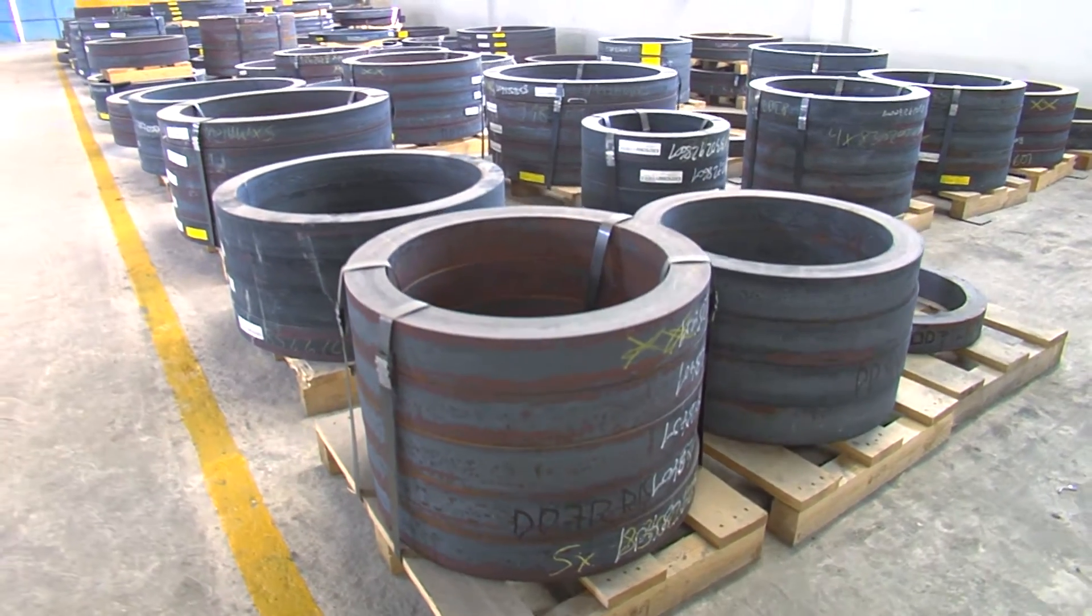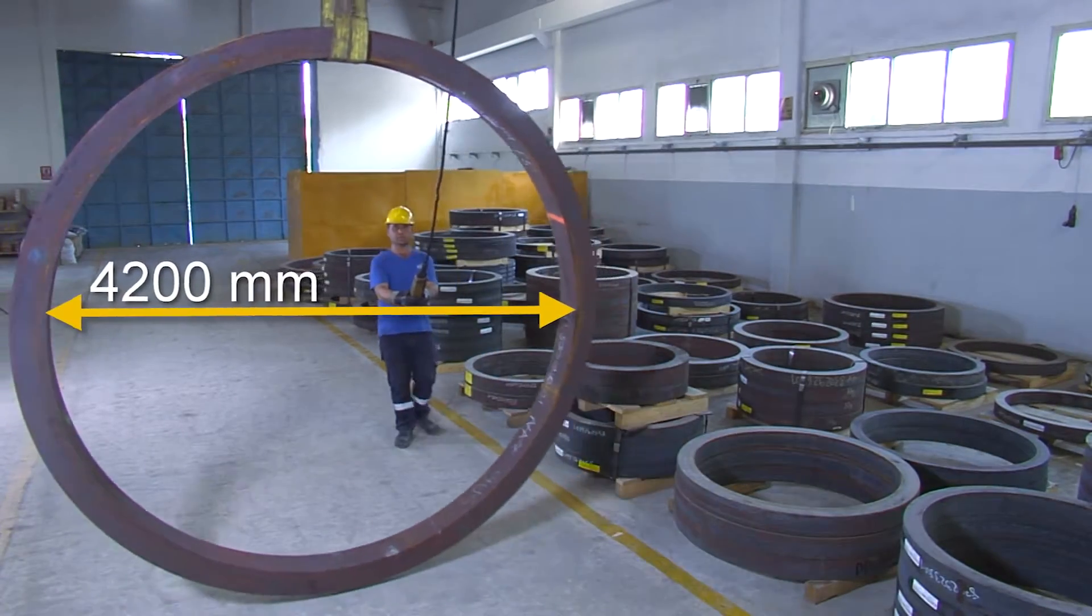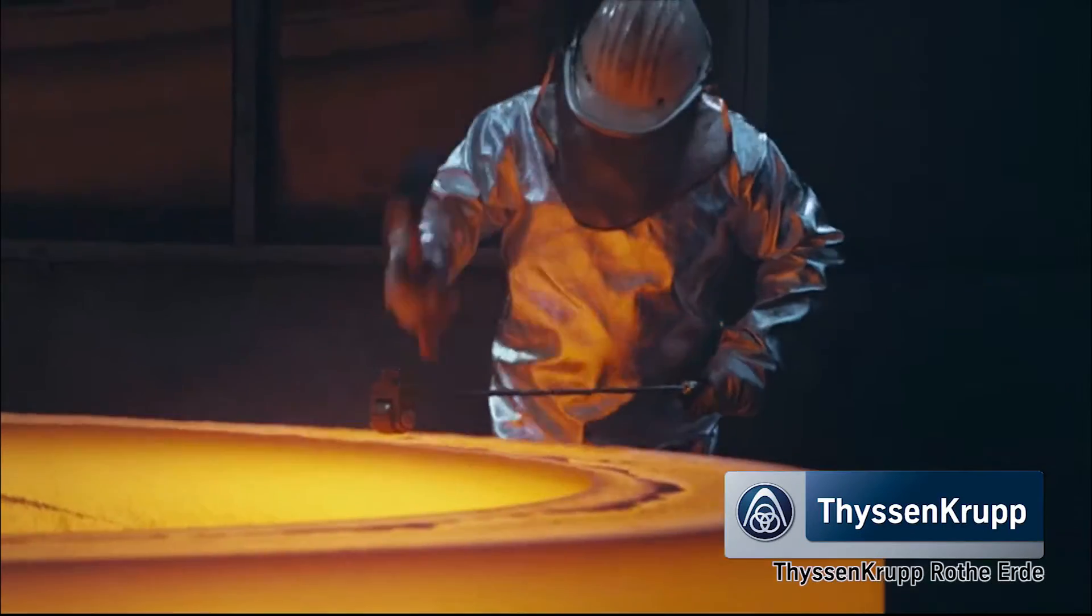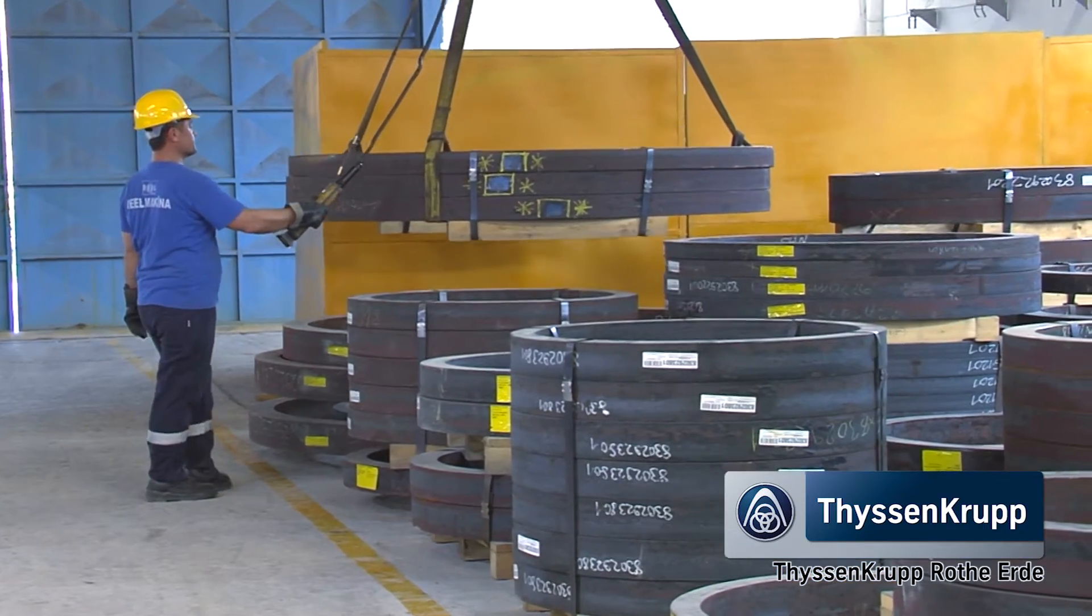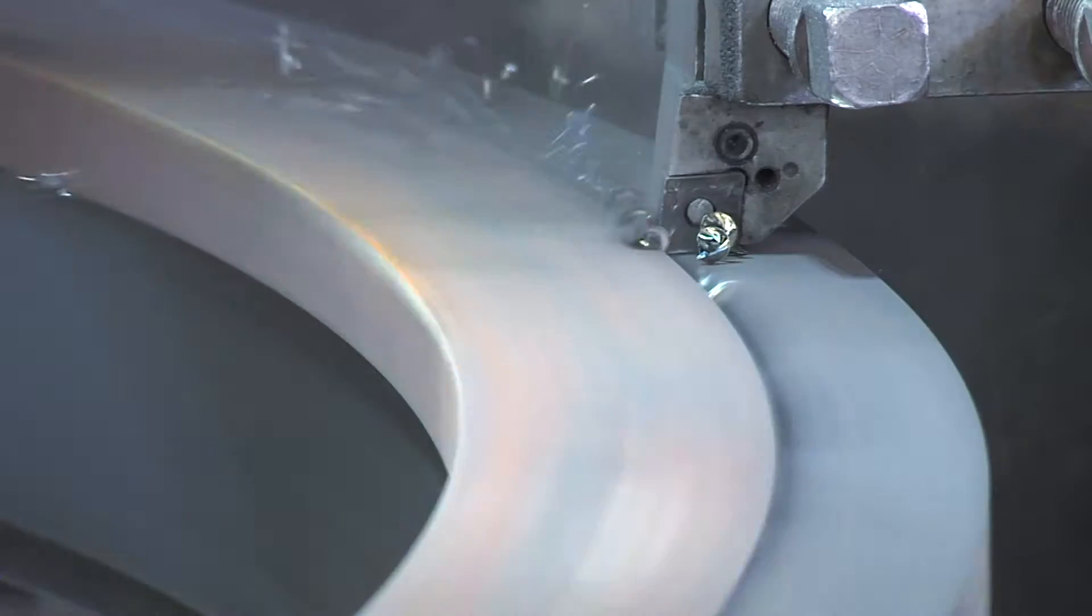Raoul Makina manufactures slewing rings up to 4,200 millimeters in diameter from high-quality rolled rings, especially imported from Germany's ThyssenKrupp Rode Erde, to provide quality industrial solutions for machinery manufacturers worldwide.